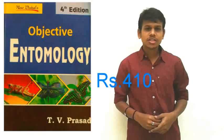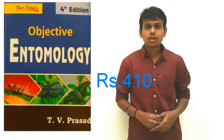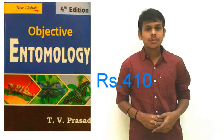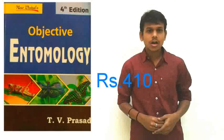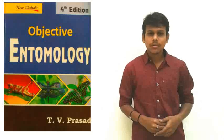Next, book number six: Objective Entomology by T.V. Prasad. In this book, the information is given in both tabular and objective forms and it covers both basic and applied aspects of entomology.